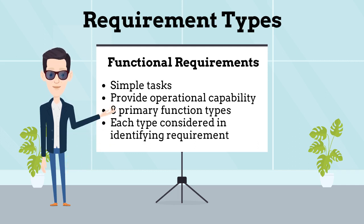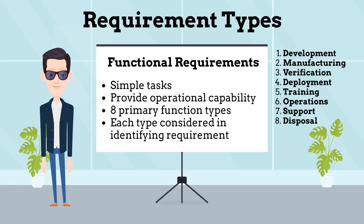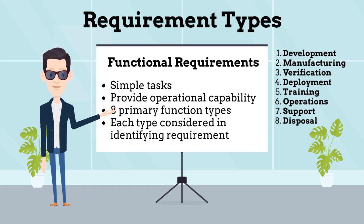Experience in systems engineering has identified 8 primary system functions that most systems must complete over their life cycle. These primary functions are: development, manufacturing, verification, deployment, training, operations, support, and disposal. Each primary system function must usually be considered in the process of identifying all the functional requirements for a system.